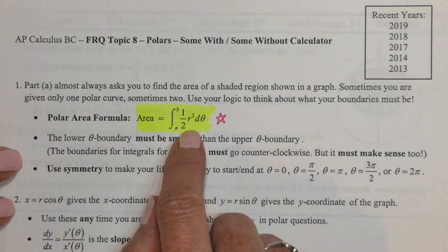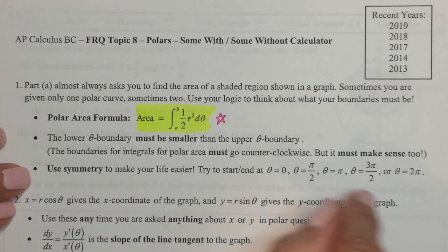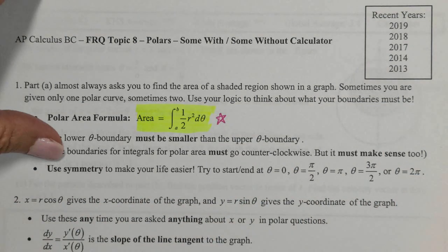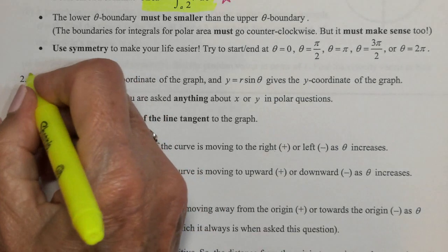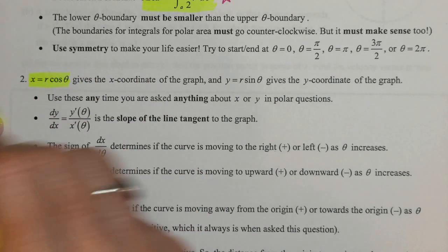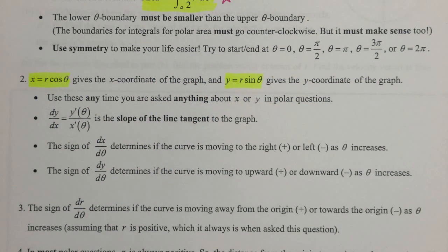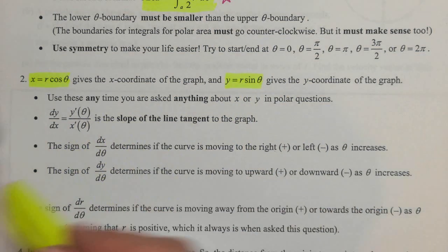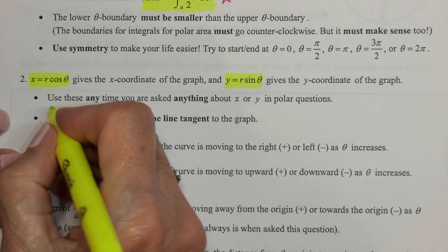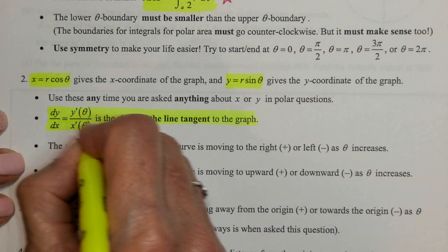The integrand on these is usually the easy part; the boundaries are the hard part. So use symmetry to make your life easier on polar area. X is equal to R cosine theta, and Y is equal to R sine theta. We use those to get leftward, rightward, or vertical movement, but we also use them to get the slope of the tangent line to the graph.